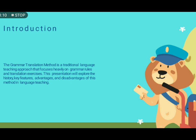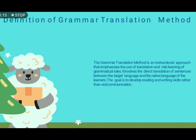The grammar translation method is an instructional approach that emphasizes the use of translation and rote learning of grammatical rules. It involves the direct translation of sentences between the target language and the native language of the learners. The goal is to develop reading and writing skills rather than oral communication.